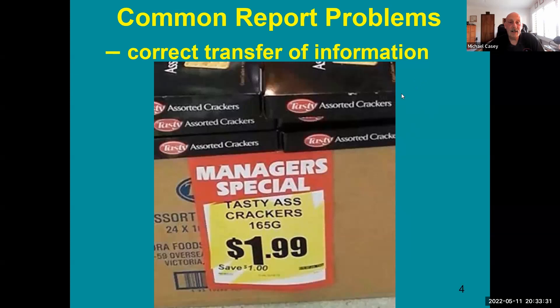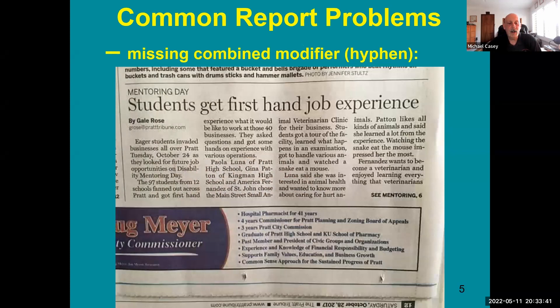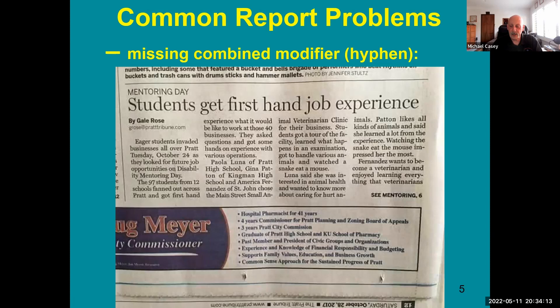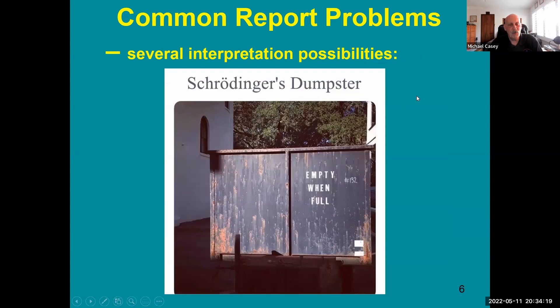This newspaper headline is missing a hyphen — it should be 'firsthand job experience.' Without it, it can be interpreted many different ways. Some people will read it one way and others another. You want to keep those different interpretations out of your report and make it as clear as possible so that anybody reading it can understand what's going on.